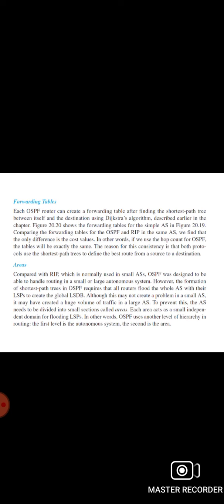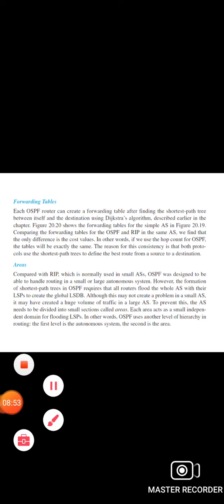Each OSPF router can create a forwarding table after finding the shortest path tree between itself and the destination using Dijkstra's algorithm. Compared with RIP, which is normally used in small autonomous systems, OSPF was designed to handle routing in both small and large autonomous systems. The formation of shortest path trees in OSPF requires that all routers flood the entire AS with their LSDBs to create a global link state database. To prevent huge traffic volumes in large autonomous systems, the AS needs to be divided into small sections called areas. Each area acts as a small interdependent domain for flooding LSPs. OSPF uses another level of hierarchy — the first level is the autonomous system and the second is the area.